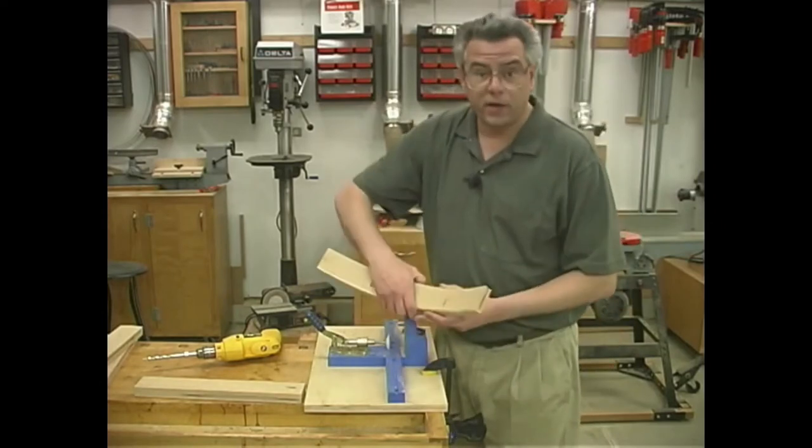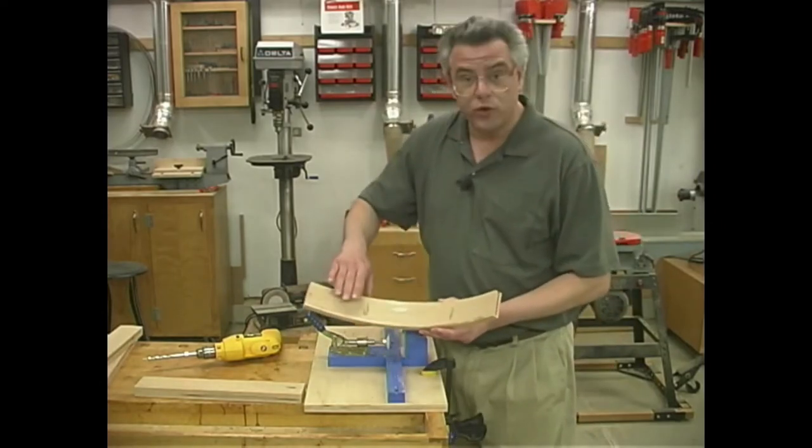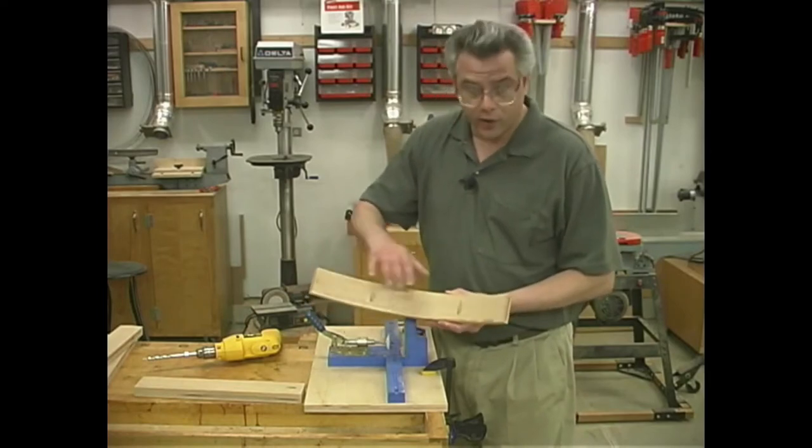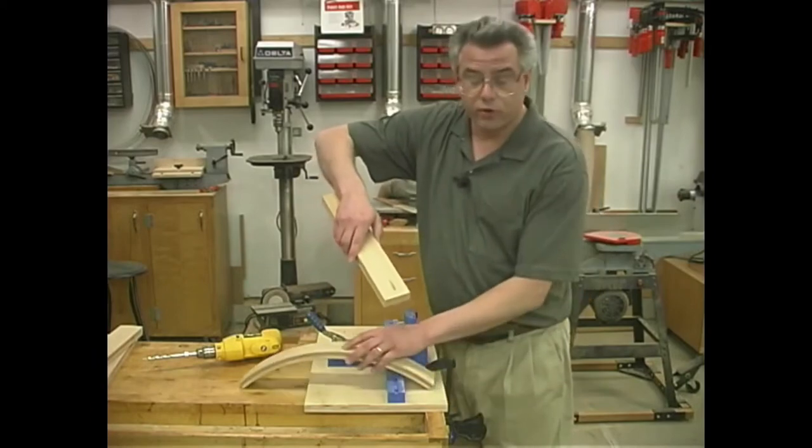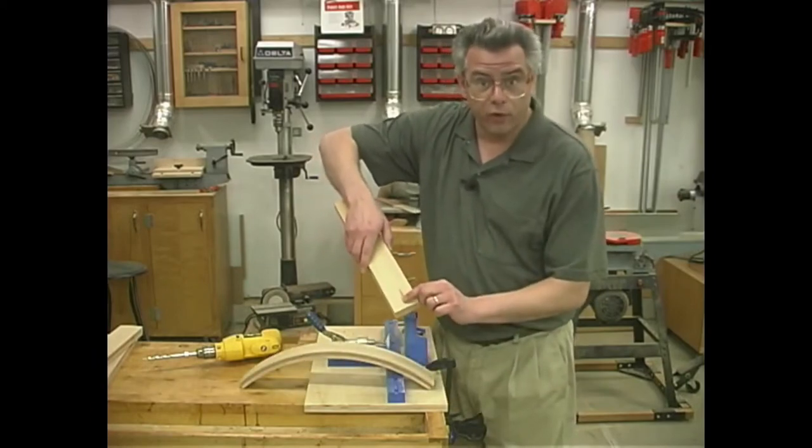Our top is going to be held onto the frame using pocket hole screws. We'll drill two pocket hole screws in each of the upper rails and one pocket hole screw at the top of each of the four legs.